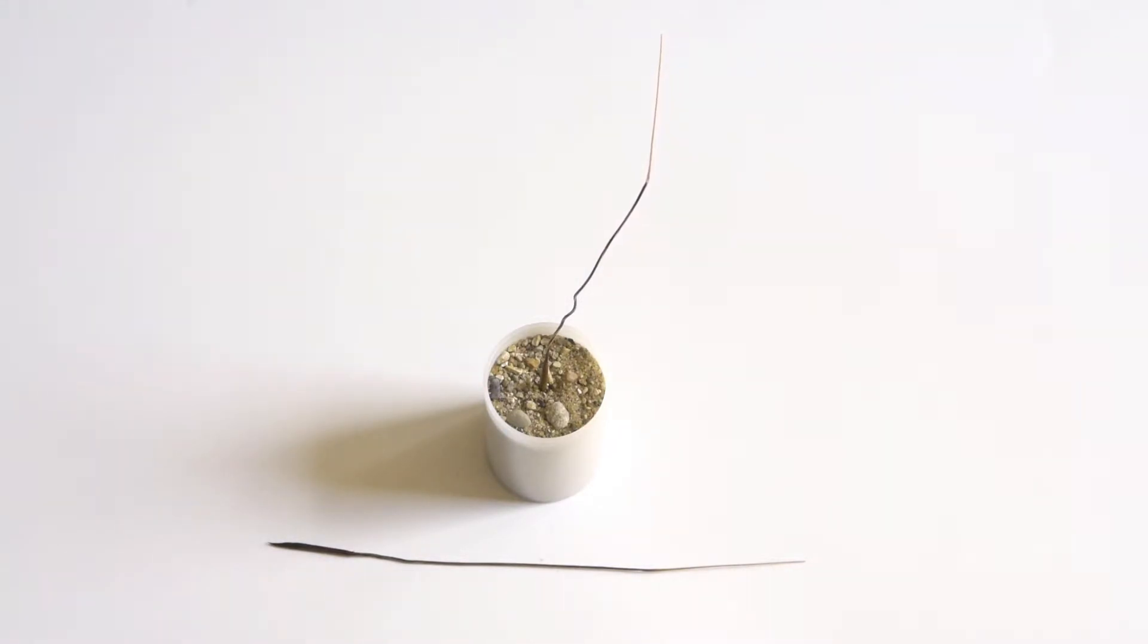To the right of the seed head is the long shaft of the spear known as the awn. As the seed dries, the awn begins to spin in the counter-clockwise direction to drill the seed head into the earth.